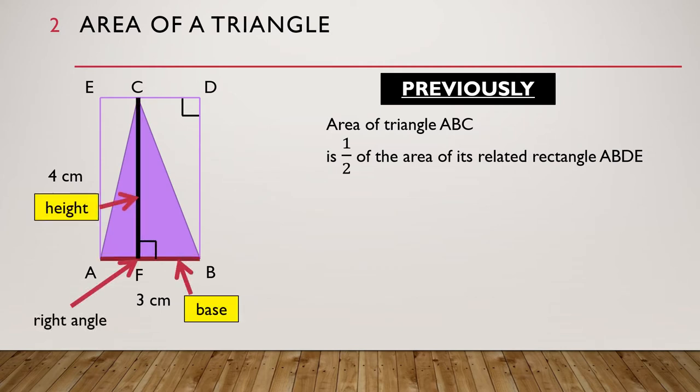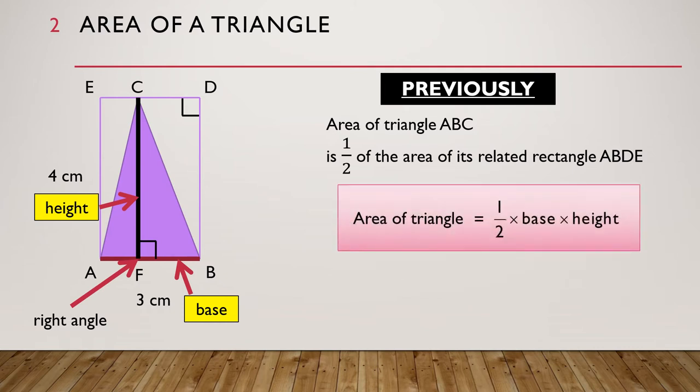We introduced the base and the height of the triangle. The height is perpendicular to the base of the triangle. We saw that the area of a triangle can be written as half times base times height. We used this to find the area of triangle ABC.